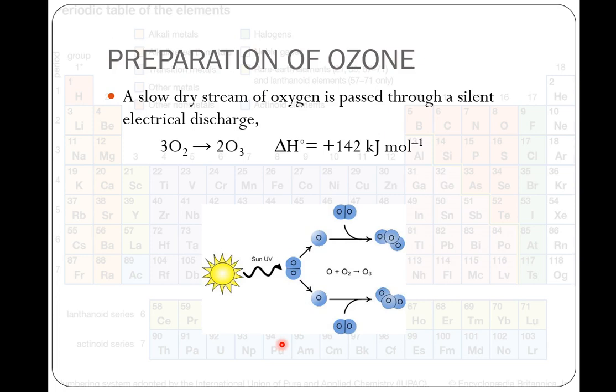Preparation of ozone. When a slow dry stream of oxygen is passed through a silent electrical discharge, then oxygen gets converted to ozone. Efficiency is 10%. This product is known as ozonized oxygen.